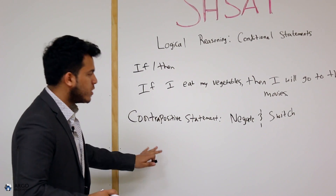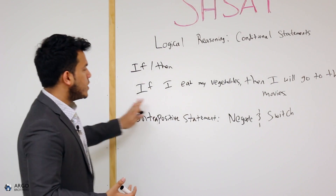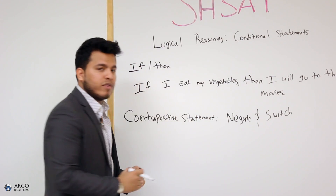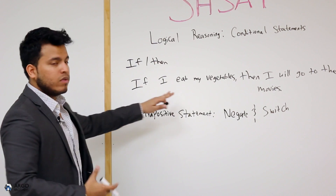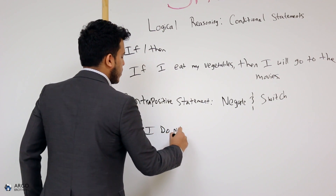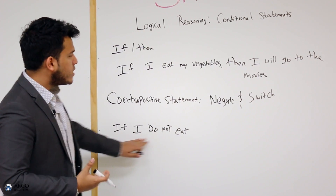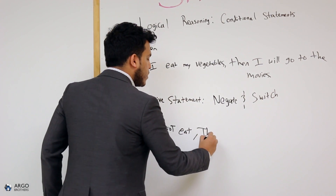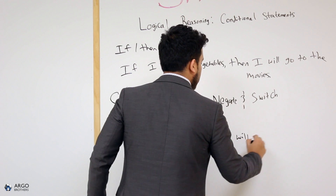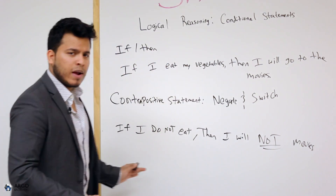I know it sounds a little confusing right now, but it will make much more sense when we actually do it. Let's go ahead and negate first. Negate simply means do the opposite. So if I eat my vegetables, the opposite is: if I do not eat my vegetables. So: if I do not eat my vegetables, then I will not go to the movies. Is this a contrapositive statement yet? No, it is not.